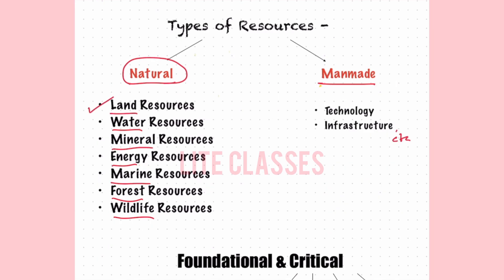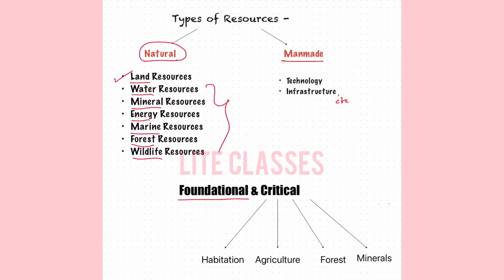We will start with land resources first because land is a foundational resource, as the availability of other vital resources like water, mineral, energy, and forest largely hinges on it. For instance, 97% of the world's water resides in saline oceans — the essential fresh water for human use is found on land as surface and groundwater. Land is also a critical resource beyond being our living and working space, as it is crucial for food production and ecosystem balance.